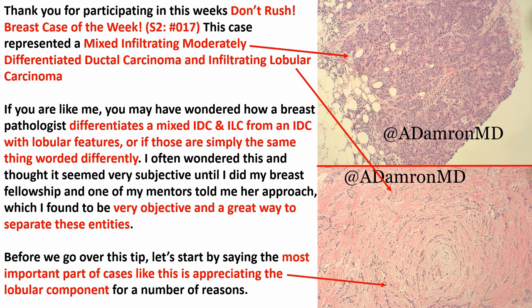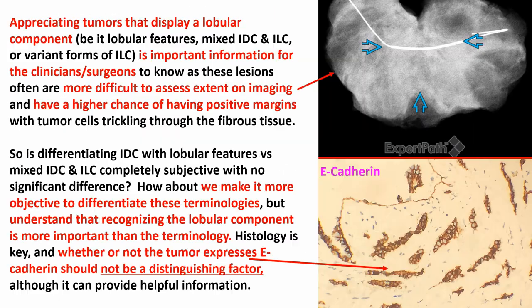Lobular carcinoma can be very difficult to evaluate the true extent on radiology, because the way these cells trickle through the fibrous tissue makes it very hard to determine where the tumor ends. Often the size of the tumor will be larger after microscopic examination compared to the presumed size of a lobular carcinoma on imaging. Because of that, you have a higher chance that these tumors will have positive margins. Lobular carcinoma also metastasizes differently — it has a tendency to metastasize to mucosal surfaces: the GI, GYN, and GU tracts. IDC doesn't typically do that; it typically goes to the liver, bone, and things like that.